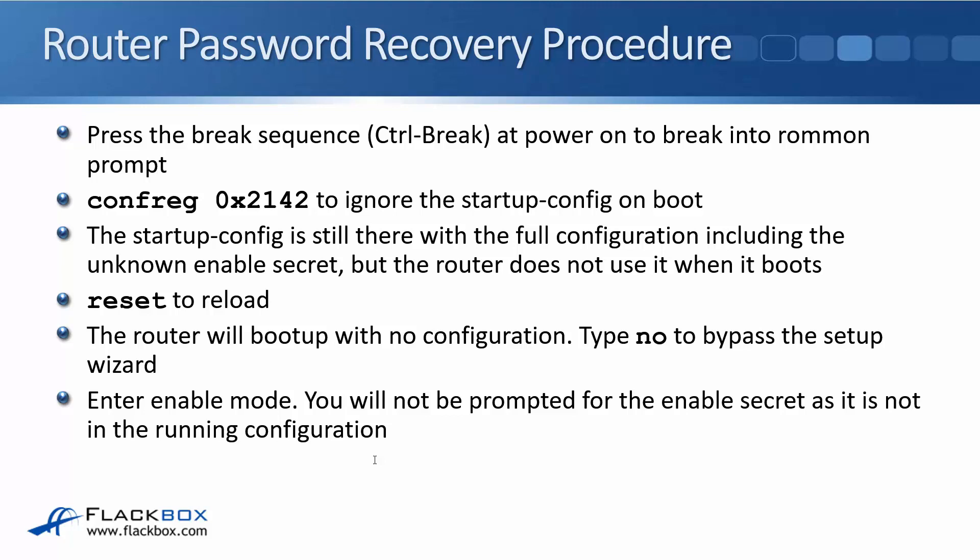Do that during the first minute that the device is powering on, and that will break you into the ROMMON prompt. You then enter the command confreg 0x2142 at the ROMMON prompt, which tells it to ignore the startup config on boot. You're not deleting the startup config like when we did the factory reset — the startup config is still there with the full configuration, including IP addresses and everything else that was configured on that device. The enable secret is still there too, which you don't know, but the router is not going to use that startup config when it boots up.